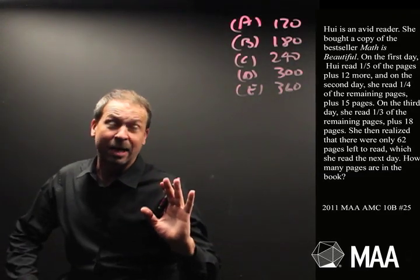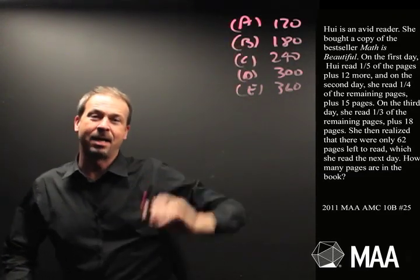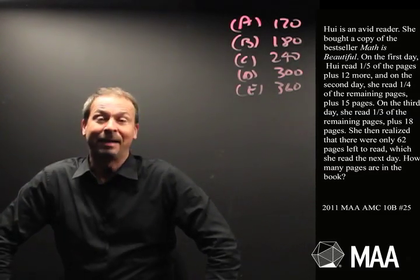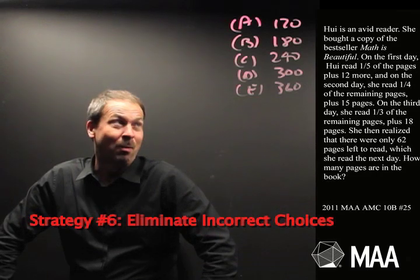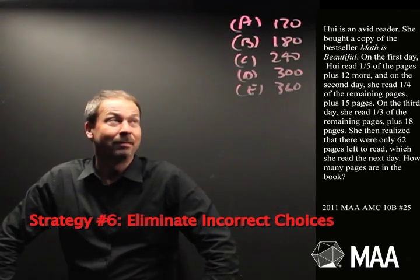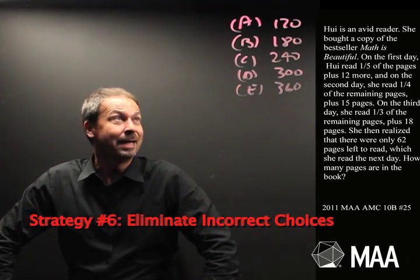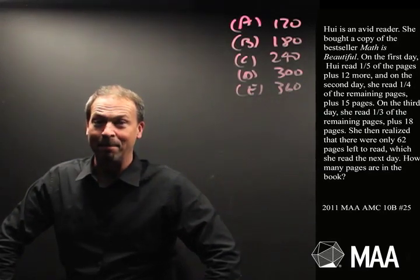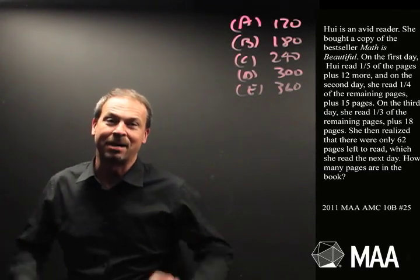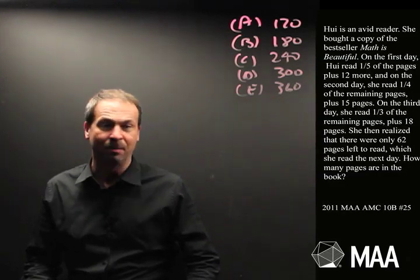But there is a nice thing, actually. Since we're given a choice of answers, it makes me think of a strategy of eliminating incorrect choices. What we could do is go through each of these one by one and see if we eliminate any of these, and see which one is left, and that would have to be the answer.